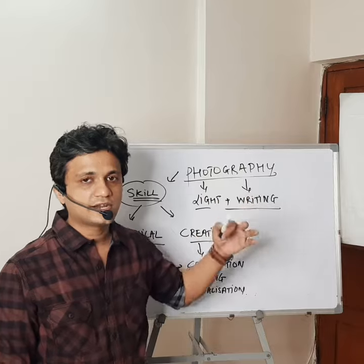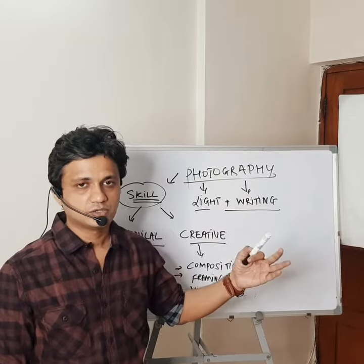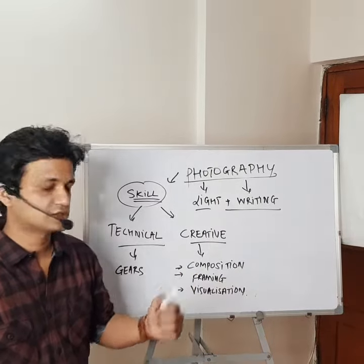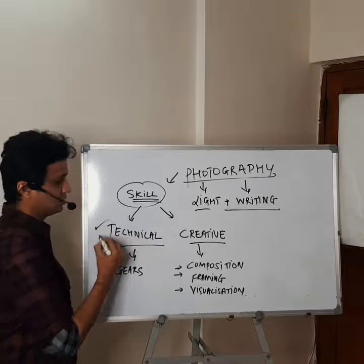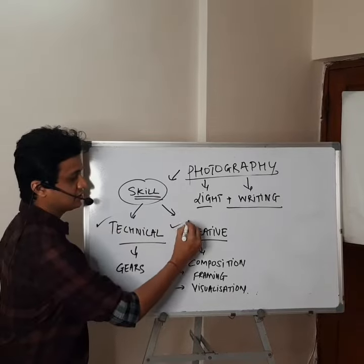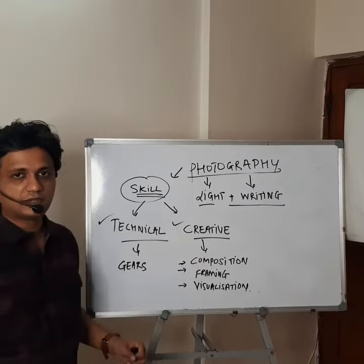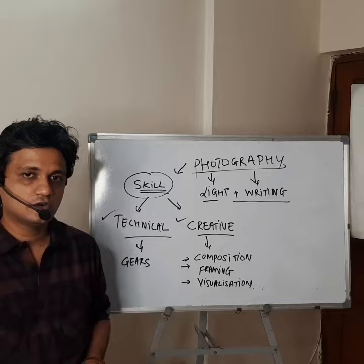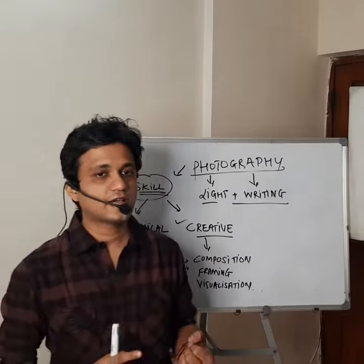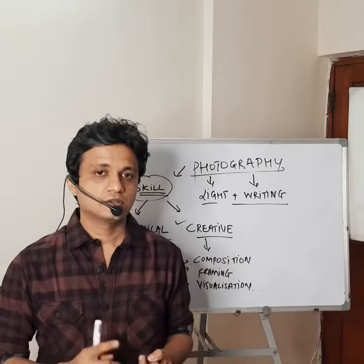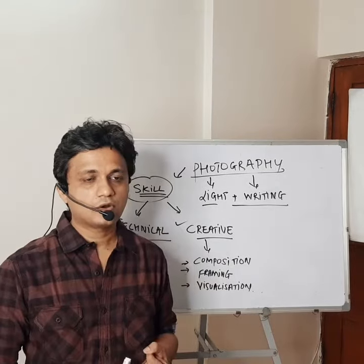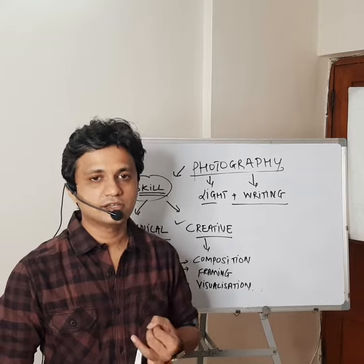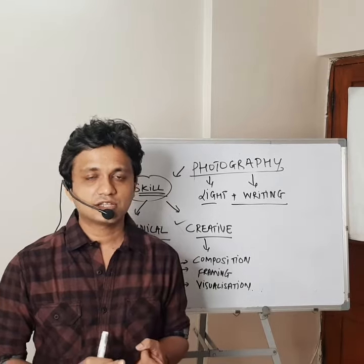Photography as a skill is about creating images. This skill has two pillars: one is a technical pillar and another is a creative pillar. The technical pillar is comprised of your camera, tripod, flash, and any other gear helpful to create images.